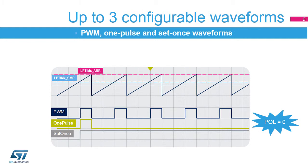The LP-TIM-CMP and LP-TIM-ARR registers, in conjunction with the WAVE bit field from the LP-TIM-CFGR register and SNG-STRT from the LP-TIM-CR register, are used to control the output waveform. The output waveform is either a typical PWM signal with its period and duty cycle controlled by the LP-TIM-ARR and LP-TIM-CMP registers, respectively, or it is a single pulse with the last output state defined by the configured waveform. If the last output state is the same as the one at the waveform's beginning, then one pulse mode is configured; if not, then set once mode is configured. The output polarity is controlled through the WAV-POL bit field in the LP-TIM-CFGR register.